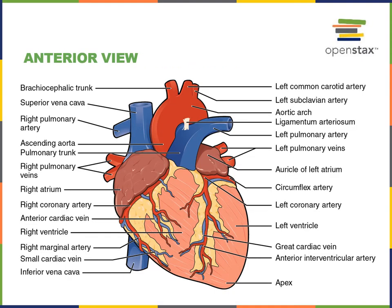This illustration shows an anterior view of the heart. Blood flows through veins into the superior chambers of the heart called the atria. We'll start by focusing on the right atrium. The right atrium receives deoxygenated blood — blood that has a low oxygen concentration — coming from the systemic circuit. This blood has delivered oxygen to cells and tissues all throughout the body and drains through the veins into the right atrium.